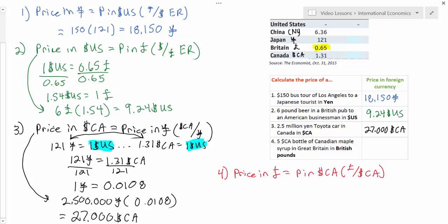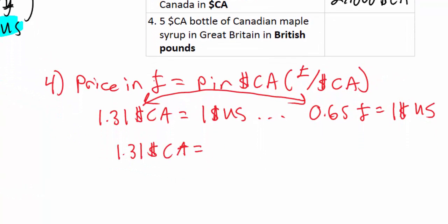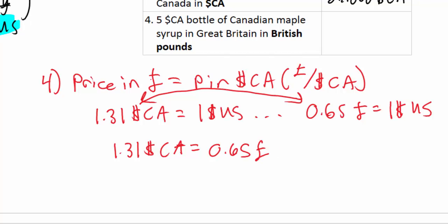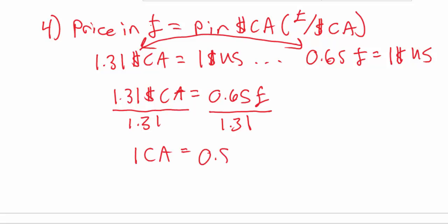To find the price in pounds of a 5 Canadian dollar bottle of maple syrup, we must multiply by the number of pounds per Canadian dollar — another exchange rate not in our table. However, we know that 1.31 Canadian dollars equals 1 US dollar, and that 0.65 pounds equals 1 US dollar. Therefore these two must equal each other: 1.31 Canadian dollars equals 0.65 British pounds. Dividing both sides by 1.31 gives us 0.5 pounds per Canadian dollar.